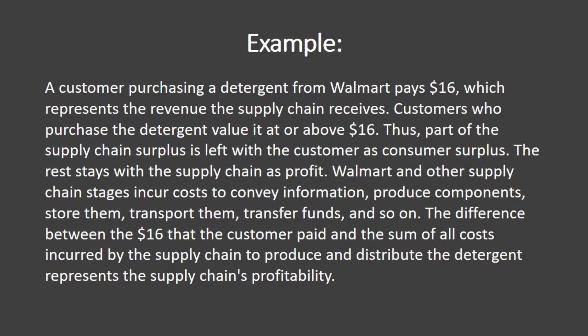Walmart and other supply chain stages incur costs to convey information, produce components, store them, transport them, transfer funds, and so on. The difference between the $16 that the customer paid and the sum of all costs incurred by the supply chain to produce and distribute the detergent represents the supply chain's profitability.